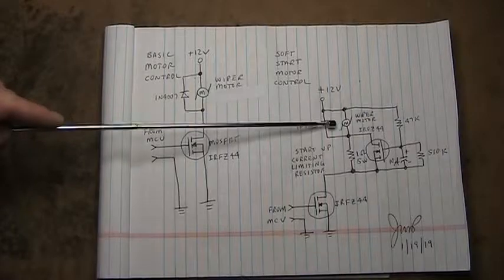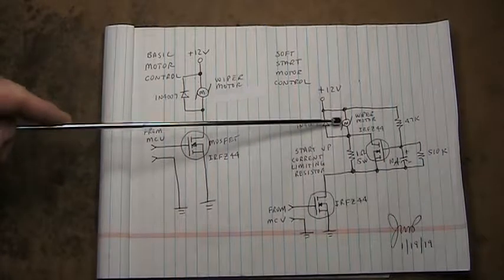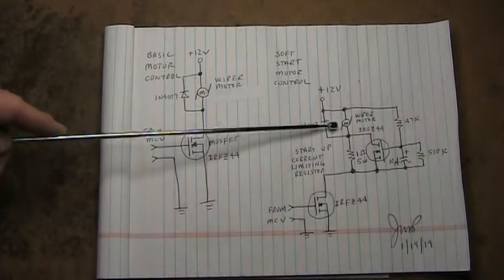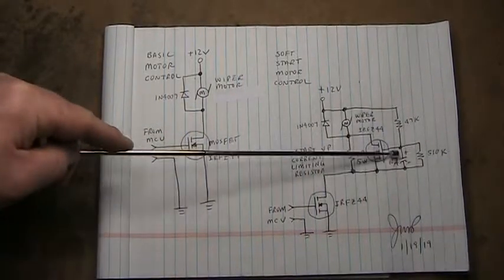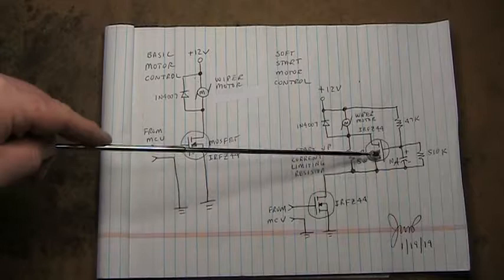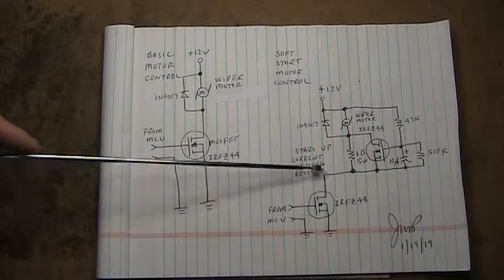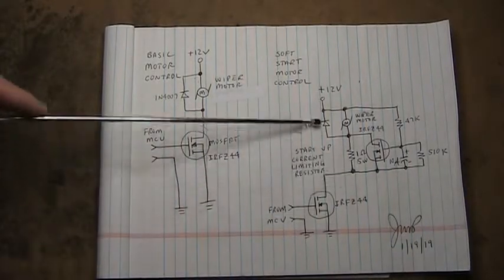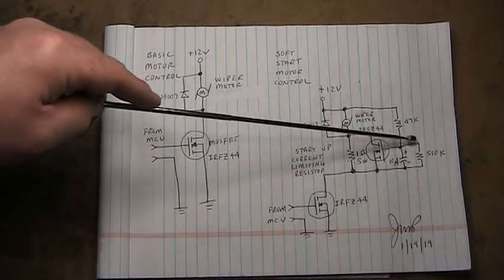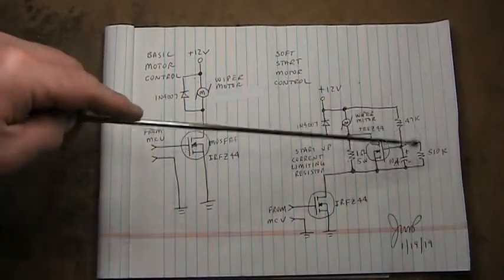But what happens is when this thing has started already, the amount of current for driving the motor is way less than the surge current at the initial startup. So this capacitor-resistor combo governs how long it takes for this transistor to turn on and bypass this current limiting resistor. And after the circuit turns on and then turns off, this opens up, your ground is gone, you don't have any more current through here. This capacitor then discharges through this resistor so that the circuit will be ready for the next time you demand the wiper motor to be turned on.